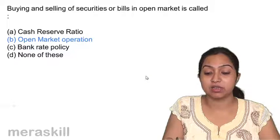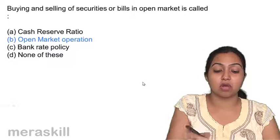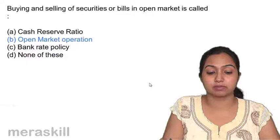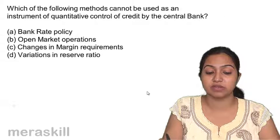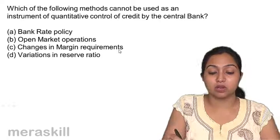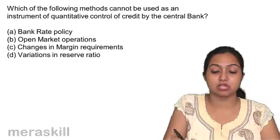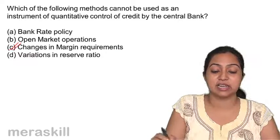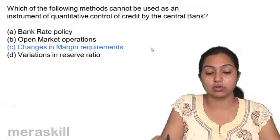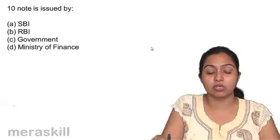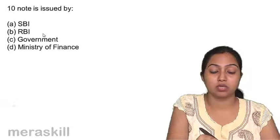Buying and selling of securities or bills in the open market is called open market operations. Which of the following methods cannot be used as an instrument of quantitative control of credit? Changes in margin requirement is a selective or qualitative measure; the rest are quantitative or general measures.